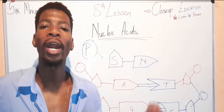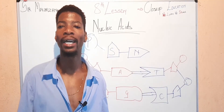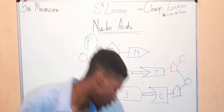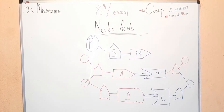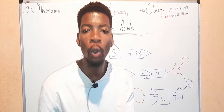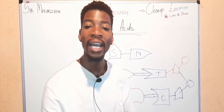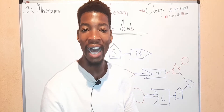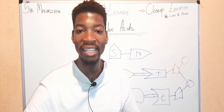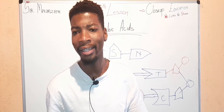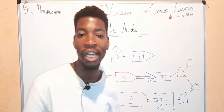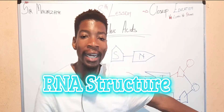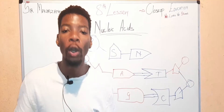Remember: in DNA there are two strands — adenine always pairs with thymine, guanine always pairs with cytosine. The weak hydrogen bond connects the two nucleotides. DNA has the deoxyribose sugar and not the ribose sugar. Now let's jump to the RNA structure.